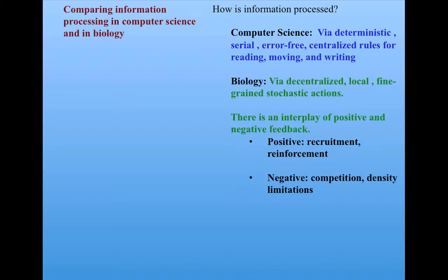There's also negative feedback that controls the positive feedback from getting out of control, such as competition and density limitations. When birds are flocking together, there's positive feedback by having birds try to get closer to each other, but also negative feedback by forcing them to separate when they get too close. In the same way, ant foraging has some negative feedback by having pheromone trails evaporate if not reinforced.